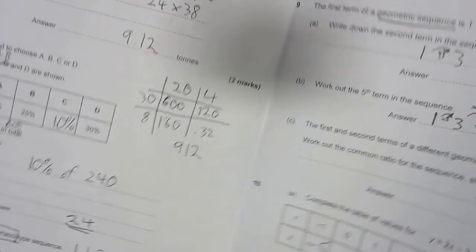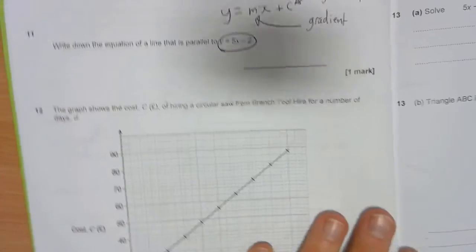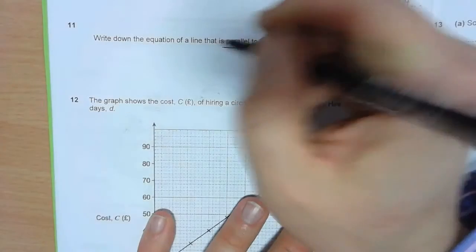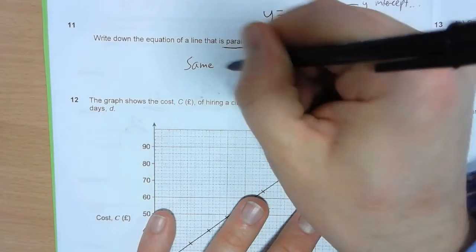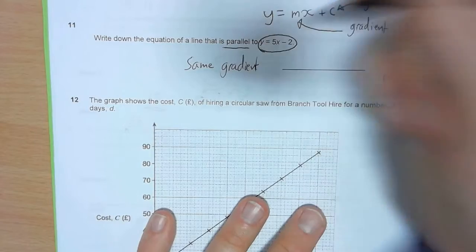But the important point about parallel lines is that they have the same gradient. So parallel lines have the same gradient.